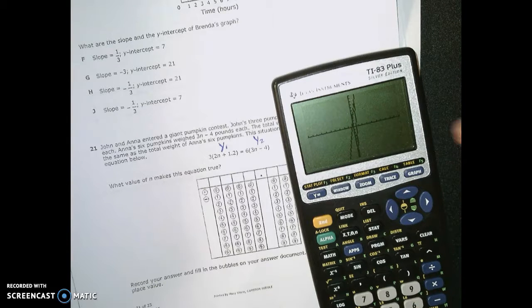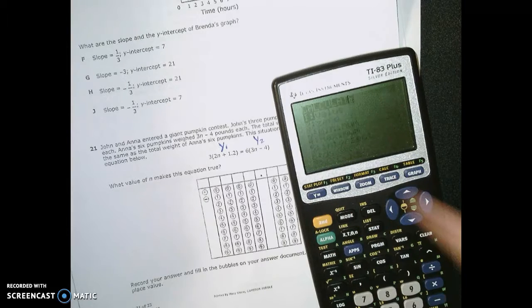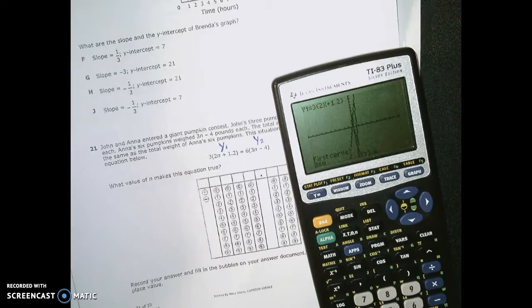I'm seeing the lines cross right about there. Let's see if it works. I'm going to do second trace. I'm going to push 5 for intersection, and push enter three times: 1, 2, 3.